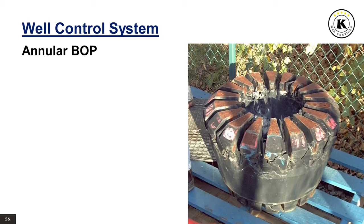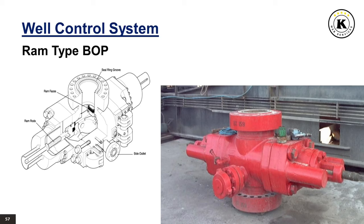The annular BOP rubber element is a vital sealing component positioned within the annular preventer, forming a dynamic seal around wellbore components to effectively contain pressure during drilling operations. Its pliability allows it to adapt to various pipe sizes, preventing uncontrolled fluid releases and enhancing well control safety. The ram type BOP derives its name from the hydraulic cylinders and ram shafts that move two sealing ram blocks. Unlike annular preventers, it only seals around a specific pipe size; the ram elements are changeable to accommodate different pipe sizes. A set of rams and annular preventers, when assembled, is known as the BOP stack.